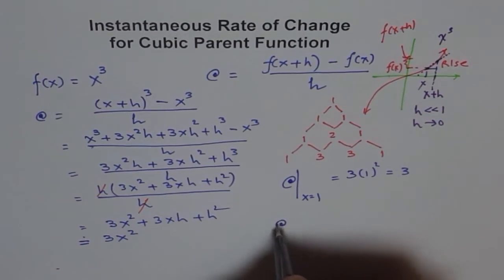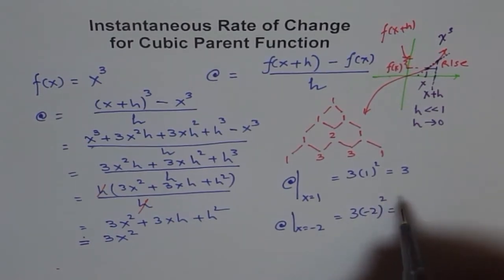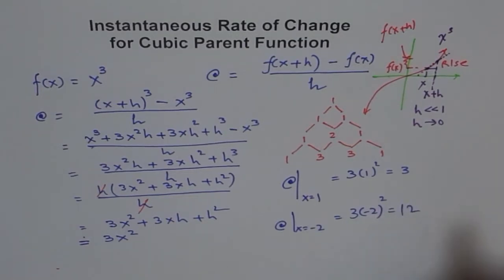If I say find the instantaneous rate at x = -2, then you will say 3 times (-2)² and that gives you a positive value of 12.